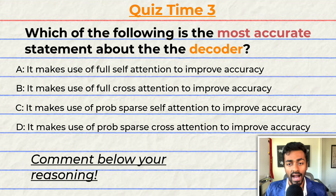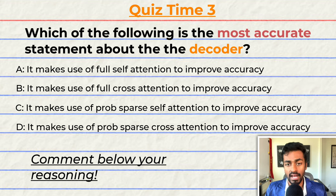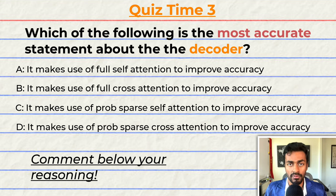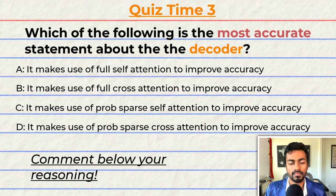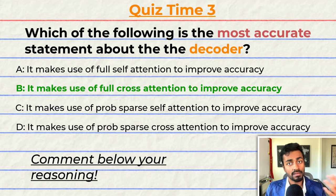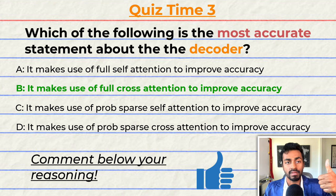Quiz time! Which of the following is the most accurate statement about the decoder? Note that multiple options may be correct. A: it uses full self-attention to help improve accuracy. B: it uses full cross-attention to help improve accuracy. C: it uses prob sparse self-attention to help improve accuracy. D: it uses prob sparse cross-attention to help improve accuracy. The correct answer is B — but can you tell me why? Feel free to comment below with your reasoning. If you think I deserve it, please consider giving this video a like.